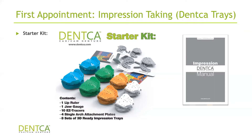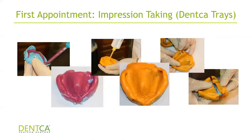The starter kit also comes with an impression manual which will help you remember anything mentioned throughout the process. What you're going to do first is size your tray in the patient's mouth. You want about one to two millimeters between the ridges and the sides of your tray, or you can match the borders of the tray with the borders of the patient's existing denture to obtain the ideal size. Do not put the denture inside the tray, but match the denture borders that would be in contact with the sulcus with the borders of the tray.